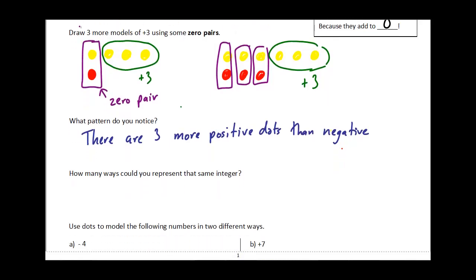The next question, how many ways could you represent the same integer? Literally, there's an unlimited amount. In math, what we say is infinite. There's an infinite number of possible ways to represent this.